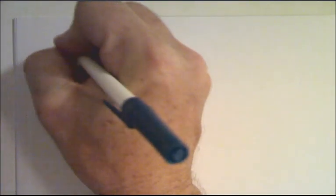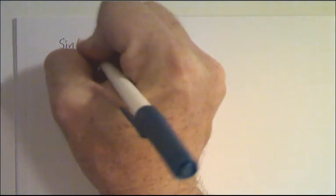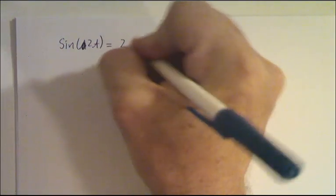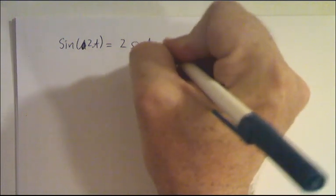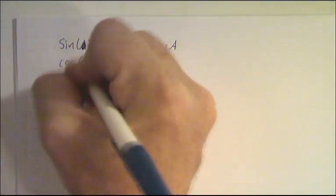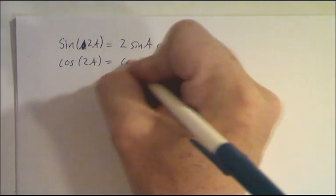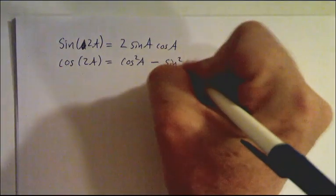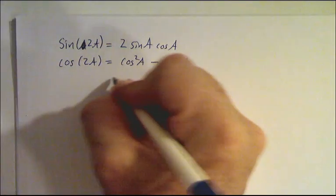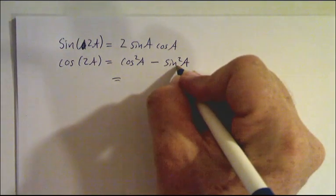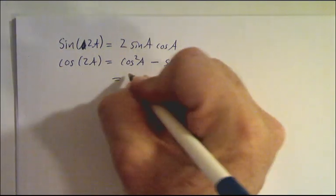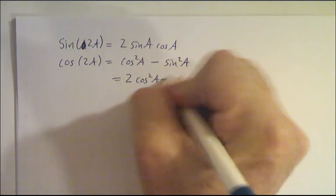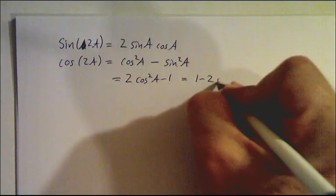Let's talk about what happens when a equals b. Sine of a plus a — that's sine of 2a — is 2·sin(a)·cos(a). And cosine of 2a is cos(a)·cos(a) - sin(a)·sin(a). You can rewrite this: since sin² = 1 - cos², this becomes 2cos²(a) - 1. And it's also 1 - 2sin²(a).